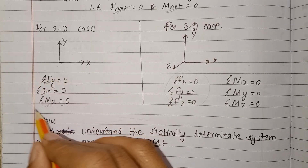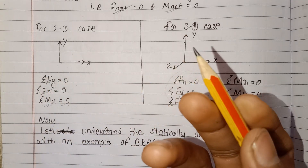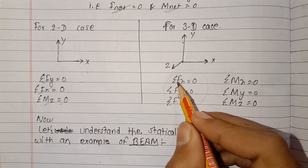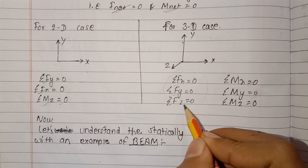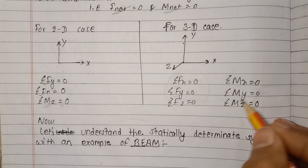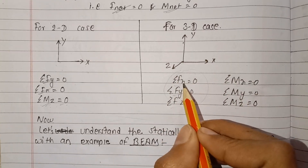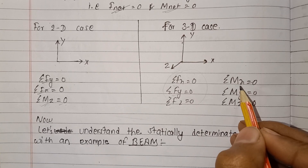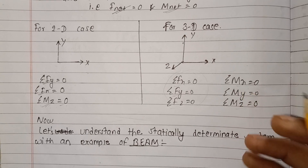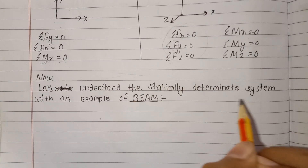In a 3D case, there are six degrees of freedom. In a 2D case, there are three degrees of freedom: the body can move along the x-axis, move along the y-axis, and rotate about the z-axis. In 3D, the body can also move along z and rotate about the x-axis and y-axis, giving six degrees of freedom total.